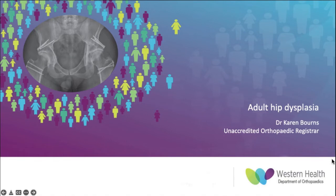Good morning everyone. My topic for this morning is adult hip dysplasia, which if you consider the time period from adolescence into late adulthood is a very broad and long topic. In order to keep things brief, I've chosen to focus mostly on the post remodeling potential phase — after the closure of the tri-radiate cartilage and prior to the degenerative phase of secondary osteoarthritis. This presents a lot of interesting management considerations and it's not something that we frequently manage here.